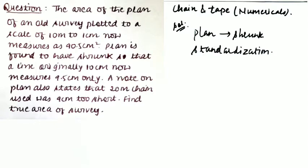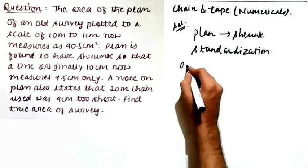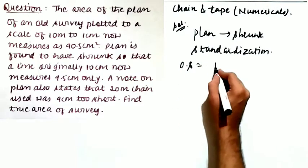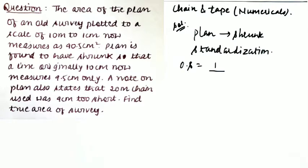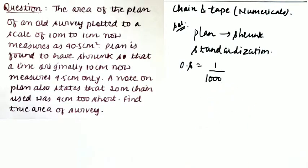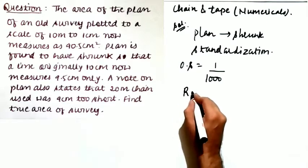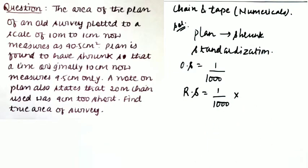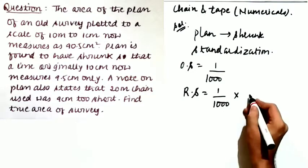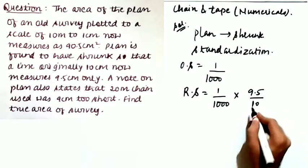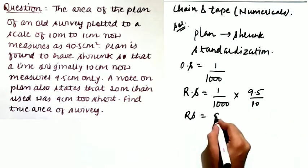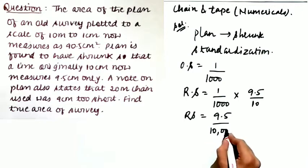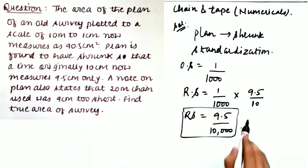First, note down the data. The original scale (OS) is given as 1 centimeter to 10 meters, which means the original scale is 1:1000. To calculate the shrunk scale (RS), multiply the original scale by the shrunk factor. Since a line originally 10 centimeters now measures 9.5 centimeters, the shrunk factor is 9.5/10. So the reduced scale is 9.5:10,000.